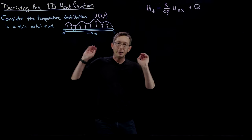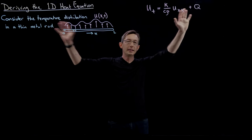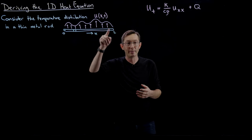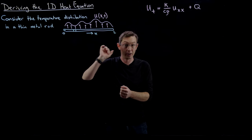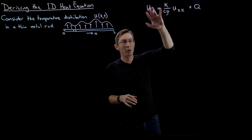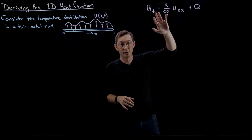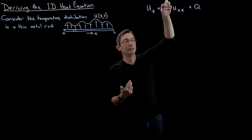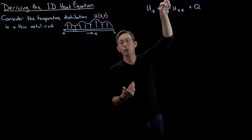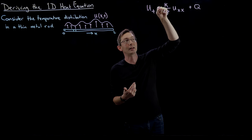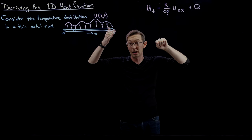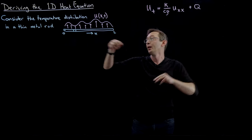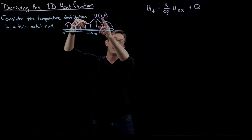Welcome back. In the last lecture we derived the 1D heat equation using conservation of thermal energy in a one-dimensional material — a thin metal rod. We came up with this partial differential equation, the heat equation, assuming the material is constant throughout, with constant diffusion coefficient, thermal conductivity, specific heat, and density. This is the diffusion equation for how temperature u(x,t) evolves in space and time.